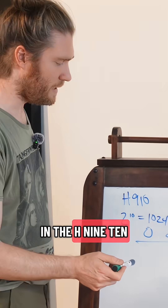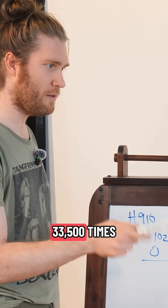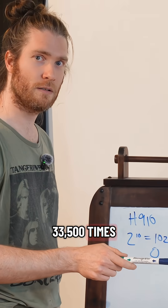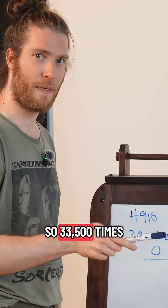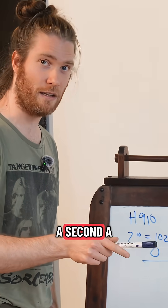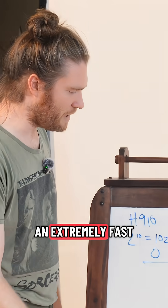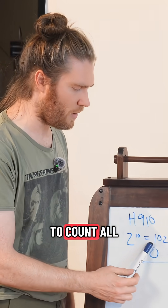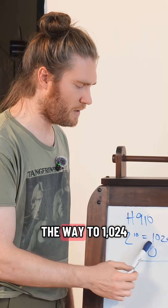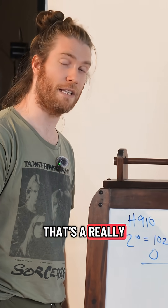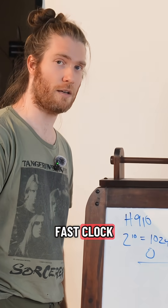In the H910, it does that 33,500 times. So 33,500 times a second, an extremely fast clock is able to count all the way to 1,024. That's a really fast clock.